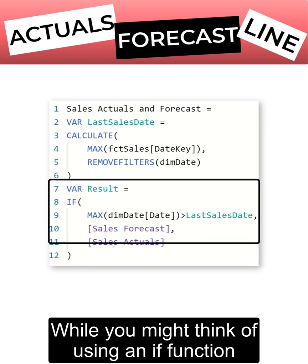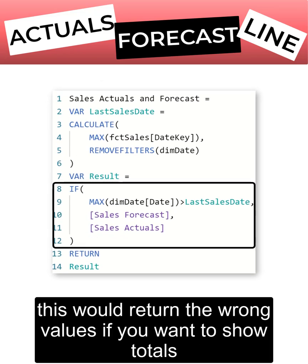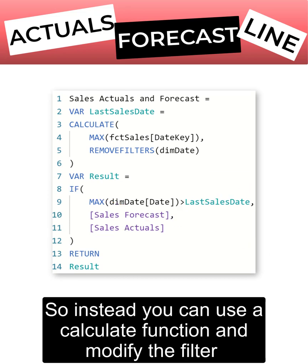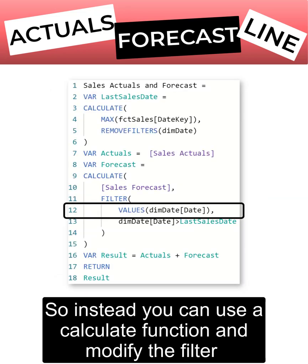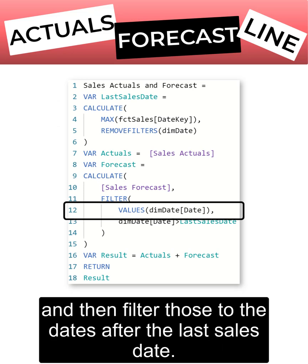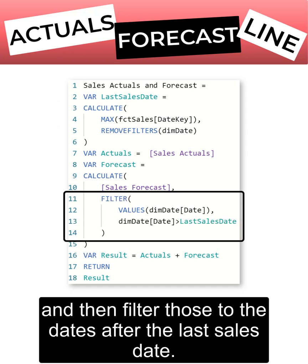While you might think of using an IF function, this would return the wrong values if you want to show totals. So instead you can use a CALCULATE function and modify the filter by taking the dates in the filter context with the VALUES function and then filtering those to the dates after the last sales date.